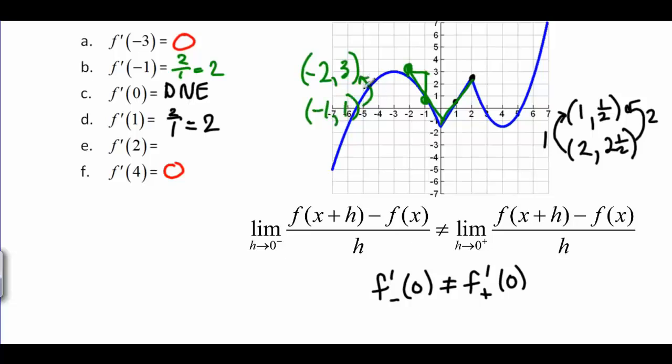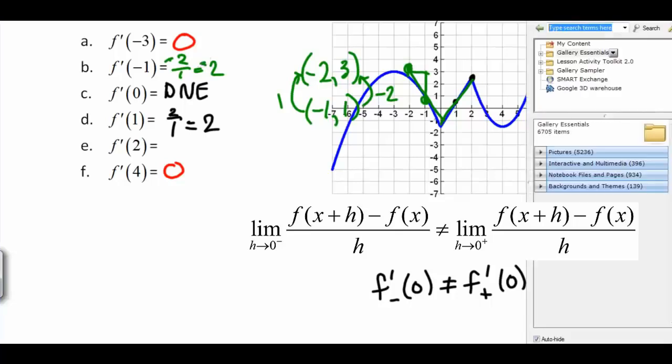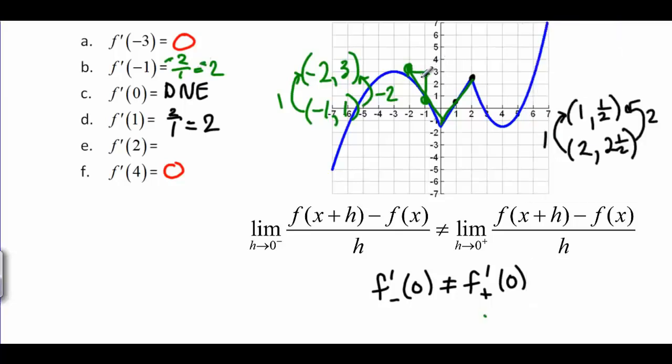The change in y here is going 1 minus 3 is a negative 2. And negative 1 minus 2 is a positive 1. So we should have had negative 2 over 1, so negative 2 actually, at negative 1. And that makes sense because, as you can see here, this tangent line is going downhill and should have a negative slope.